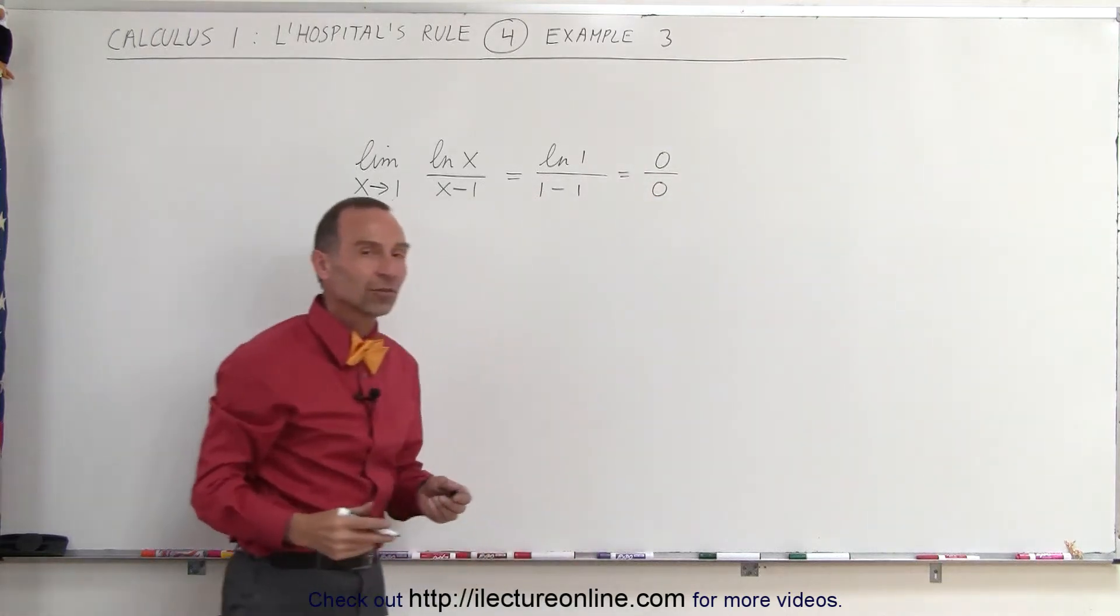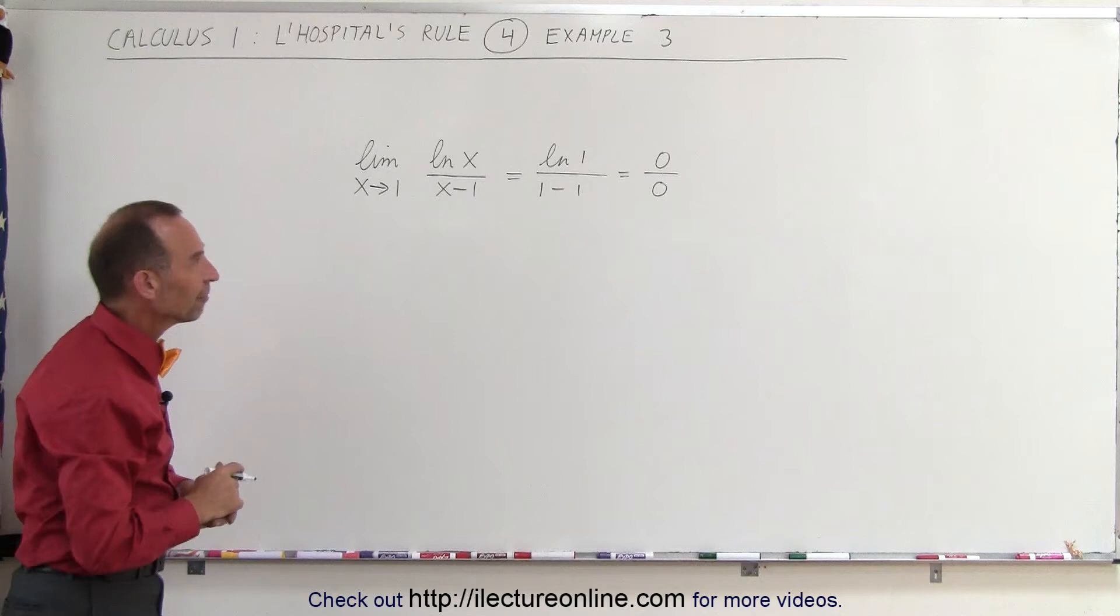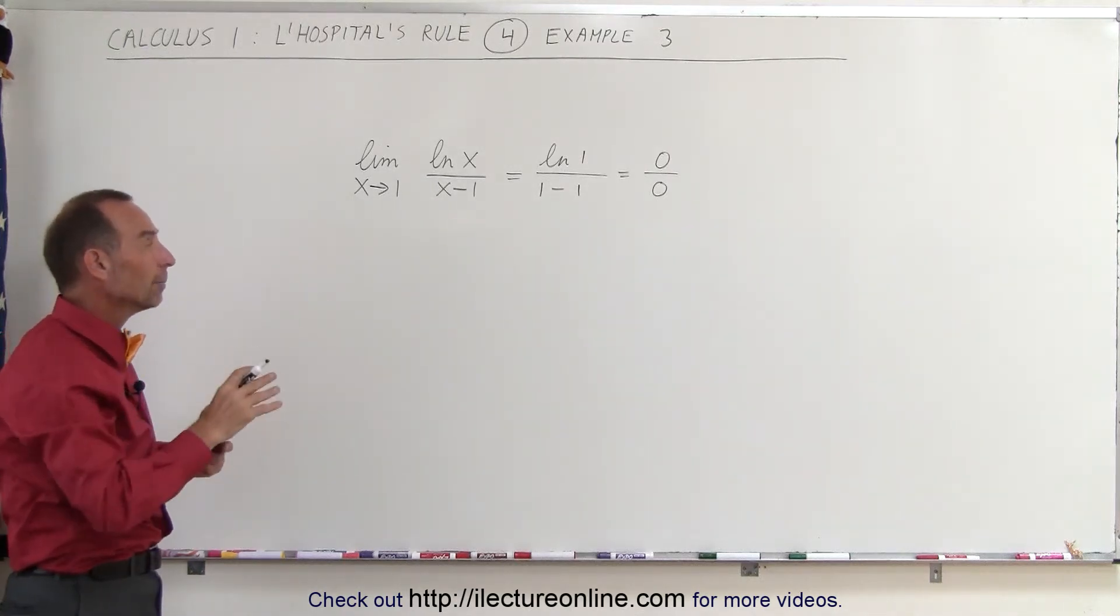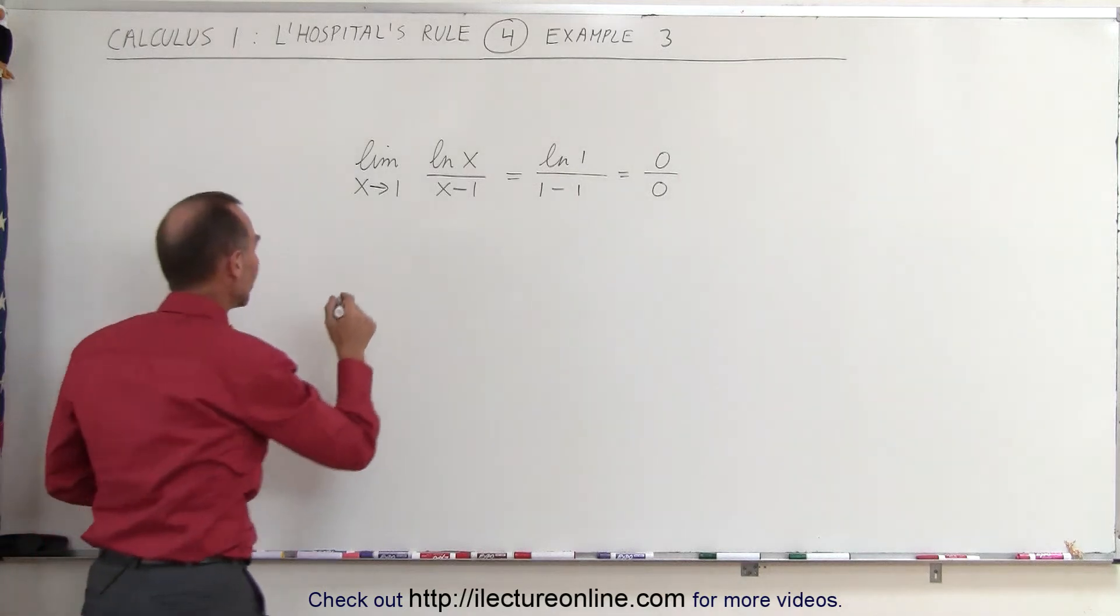So we have a 0 divided by 0 condition which is undefined. So let's try again by taking the derivative of the numerator and the denominator and then taking the limit and see what happens.